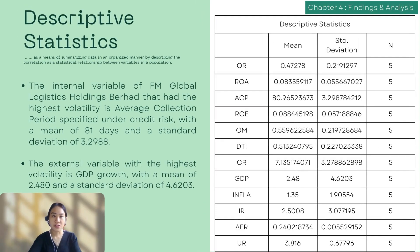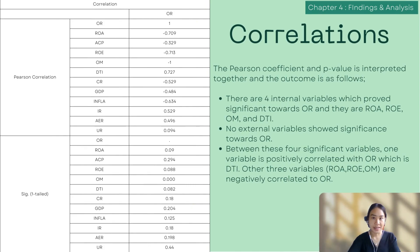Moving on to Chapter 4, findings and analysis, starting with descriptive statistics: the internal variable with the highest volatility is the average collection period under credit risk, with a mean of 81 days and a standard deviation of 3.2988. The external variable with the highest volatility is GDP growth, with a mean of 2.48 and a standard deviation of 4.6203. Pearson correlation coefficients and p-values are interpreted together, with outcomes shown in the table on the left.